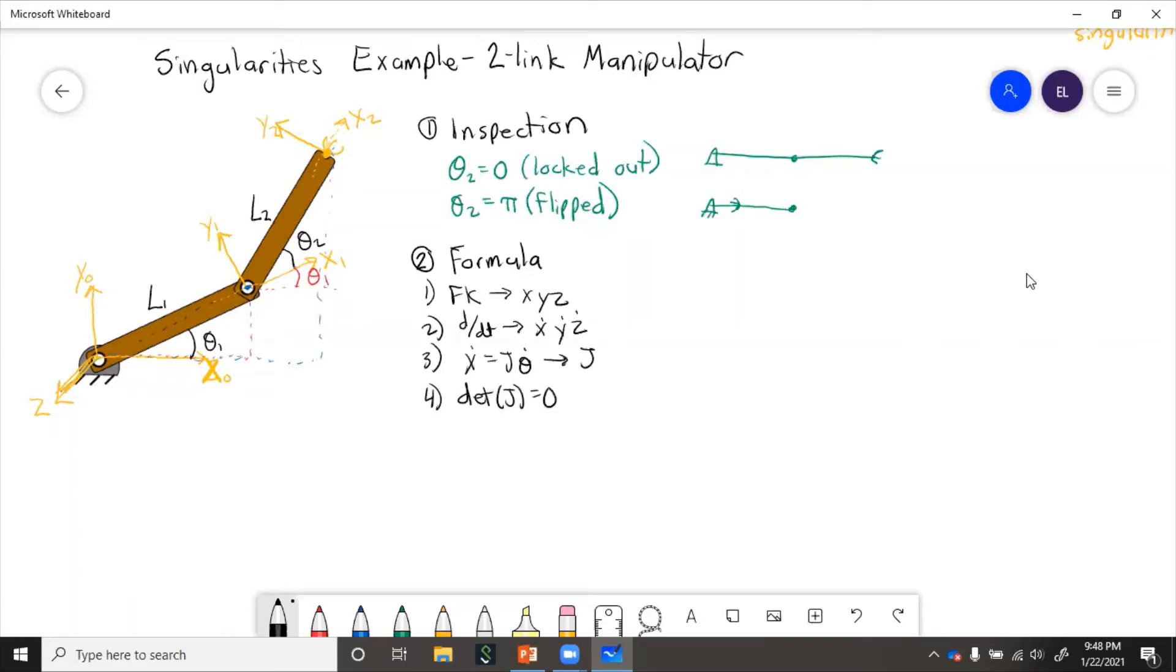Now the Jacobian we found before. We found this Jacobian in a previous video. So now we just need to set its determinant equal to zero and solve for what joint values make that possible.